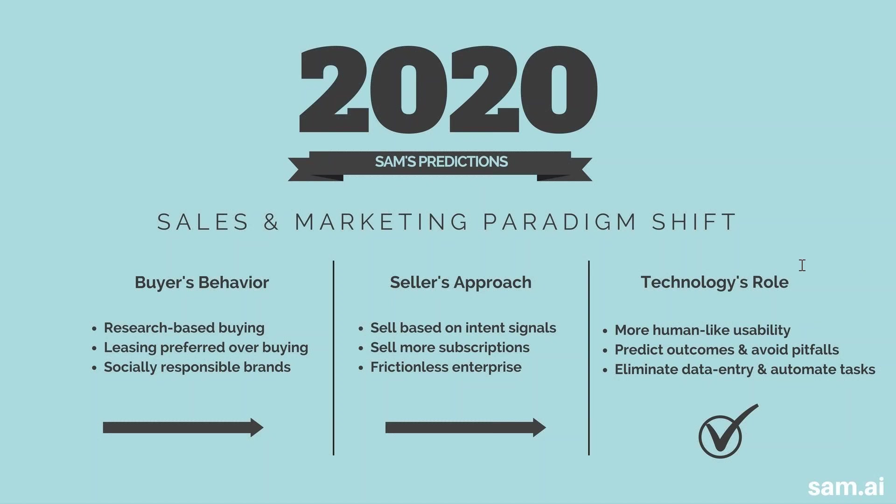Sell based on intent signals — don't try to sell anything to anyone that hasn't shown you any intent. To those folks, you want to educate them. If you've got a prospect list and you don't know if they're interested in your product, whether it's a Facebook ad or an email blast, you want to educate them as much as possible and see if they're interested. Intent signals could be a web submission, someone who clicked in your email campaign, someone who made a call, or someone who opted into your newsletter. Sell more subscriptions — whatever products or services you're selling, you might want to modify and make them more affordable by making them a subscription. People want to lease and rent and not buy, and if you can offer your service as recurring revenue, it's better for your business and for the consumer.